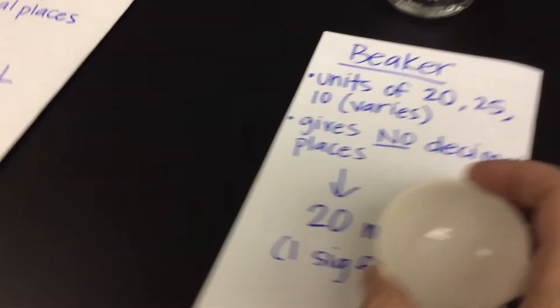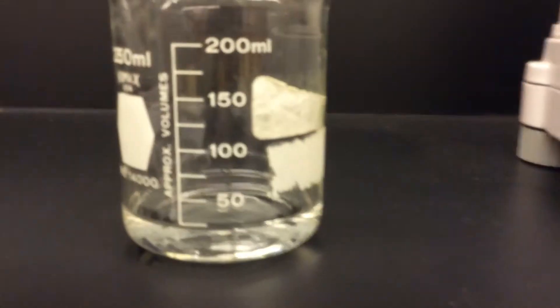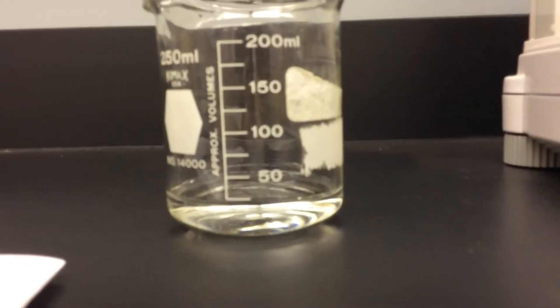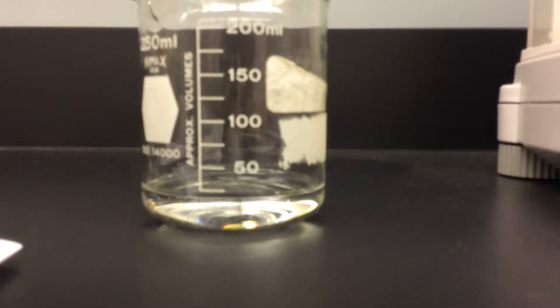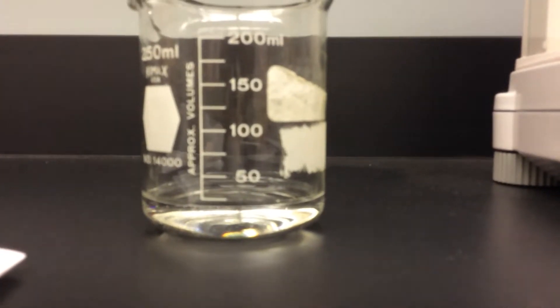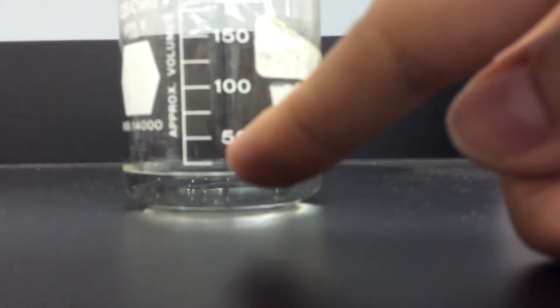Now let's do trial two using the beaker. We used this exact same beaker a few minutes ago when we did sig figs and why do we do them. So I'm trying to get 20 milliliters from this beaker. Well, there's 25 right there. That's the lowest volume on my beaker.